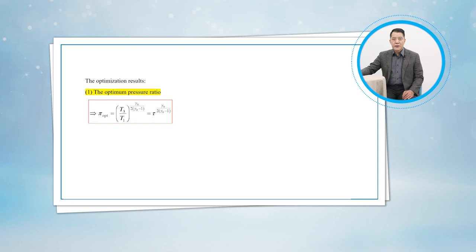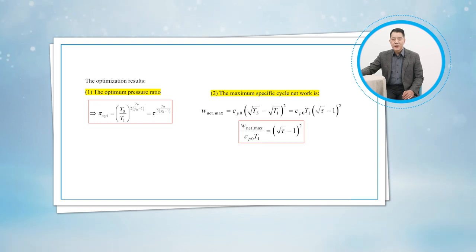The first is the optimum pressure ratio, and it is. The second is the maximum dimensionless cyclic-specific network, and it is. It is found only depending on the temperature ratio.